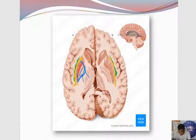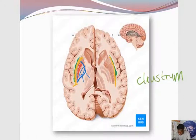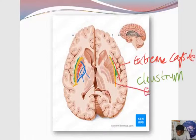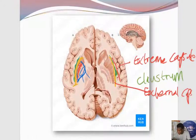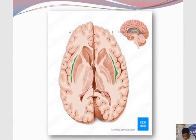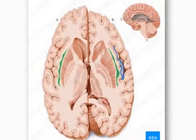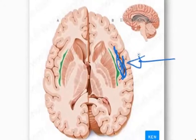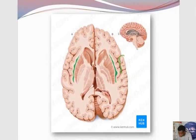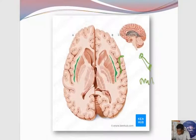The external capsule is lateral to the putamen. The structure represented in green is the claustrum — it's just a thin band of gray matter, and that structure can actually be pinned in your specimen exam; it is commonly asked. Beyond the claustrum there is another thin band of white matter called the extreme capsule. Medial to the claustrum we have the external capsule; beyond the claustrum we have the extreme capsule. Beyond the extreme capsule we'll be encountering the insular cortex, the deepest part of the temporal lobe. And beyond the insular cortex we'll find ourselves within the Sylvian fissure, which is associated with branches of the middle cerebral artery.